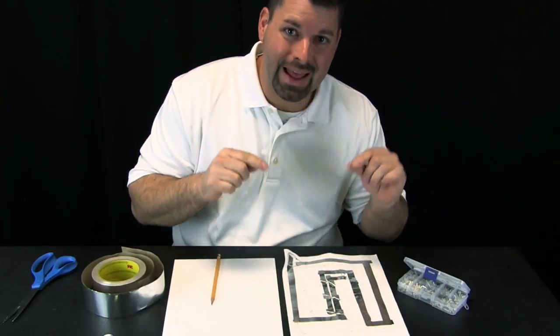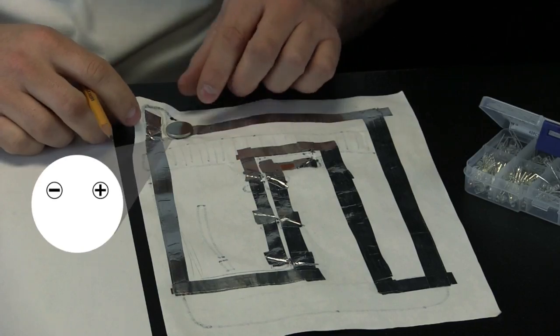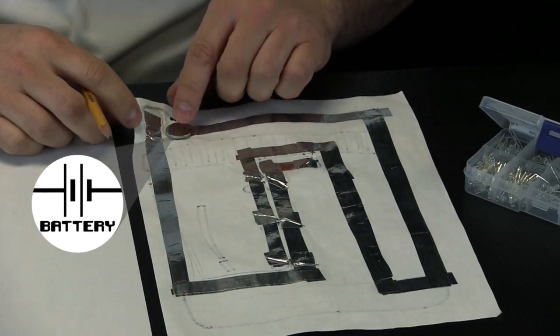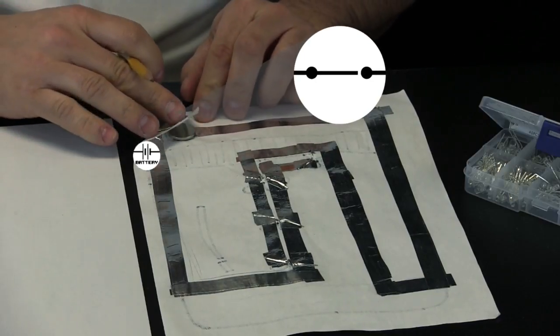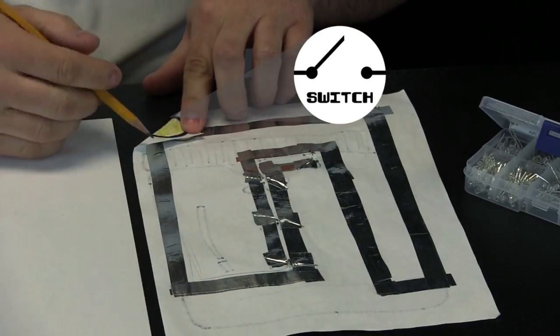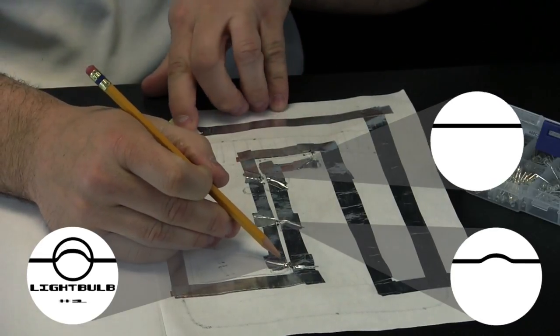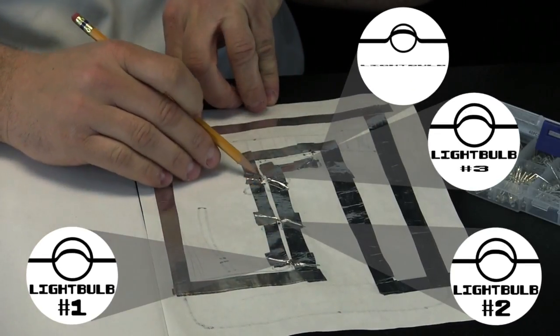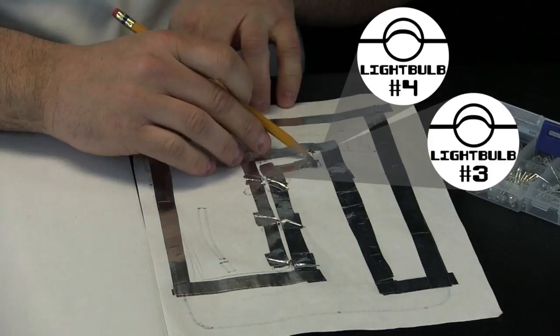So let us take a little time to explain this circuit. Our battery goes right here and folding the corner of the paper is our switch. If you follow our circuit, we have one light, two lights, three lights, and four lights in our circuit.